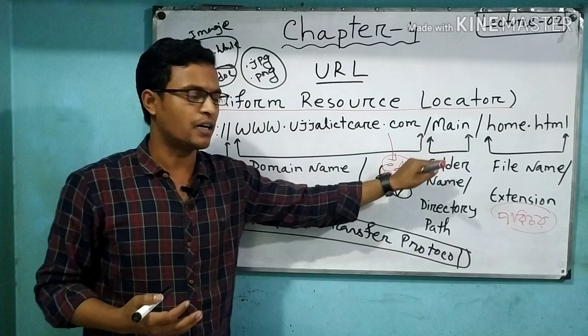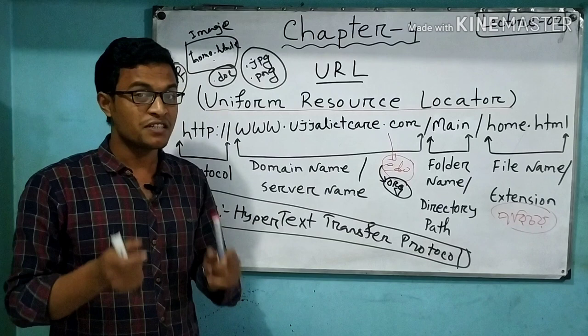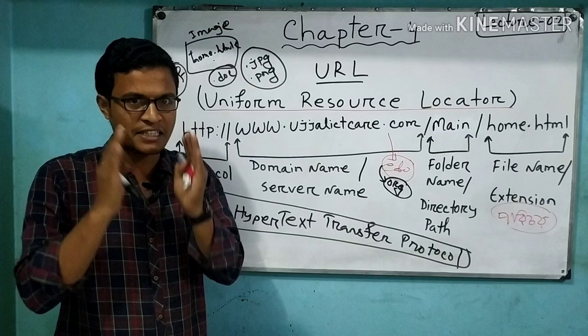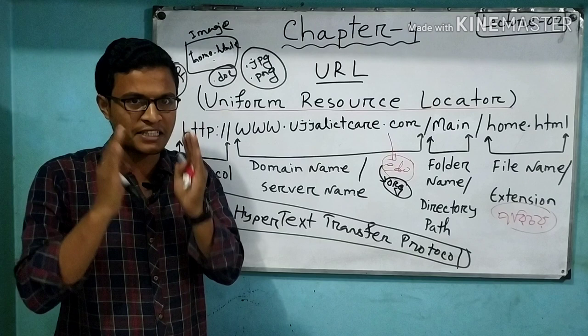If you have a URL, you need to add the protocol, then add the domain name, then add the directory path with the file name. The file name is called a path — those parts together form the complete URL.